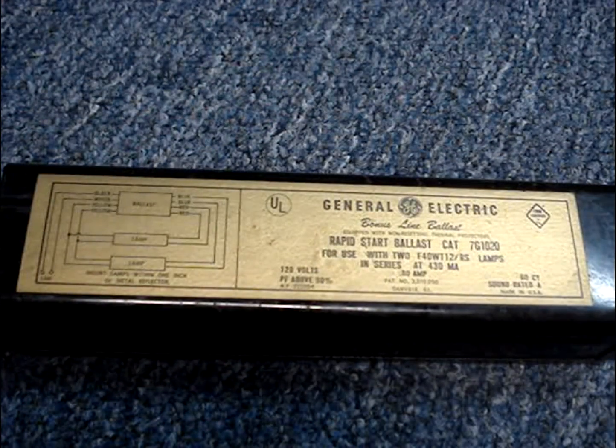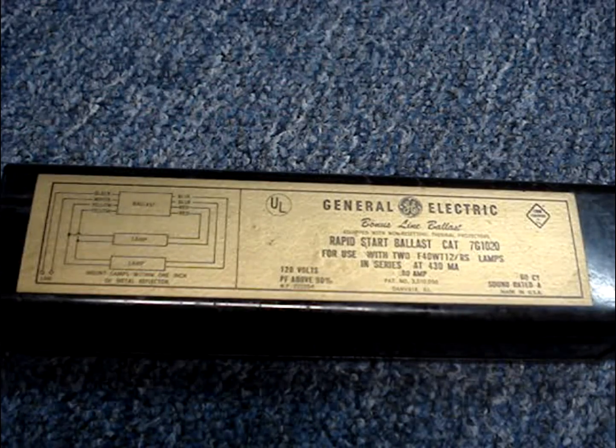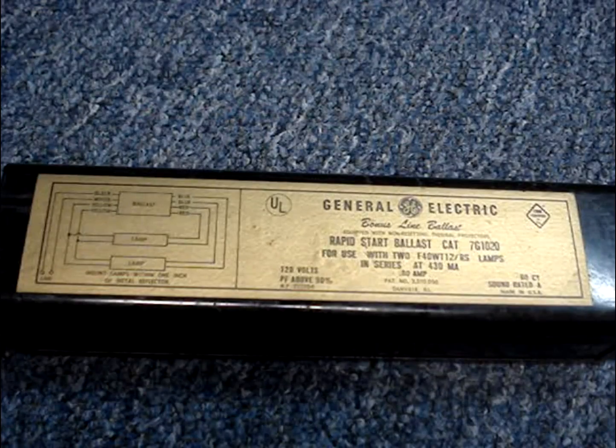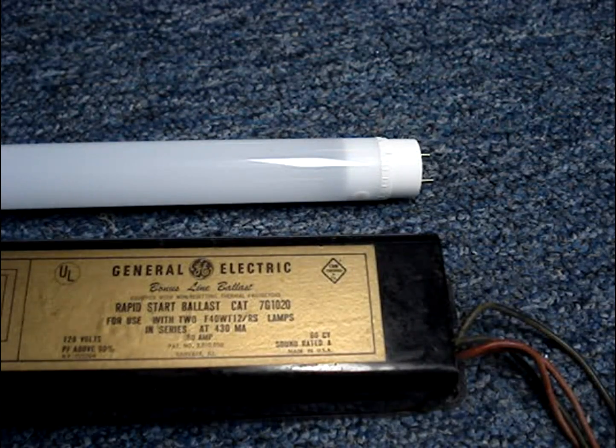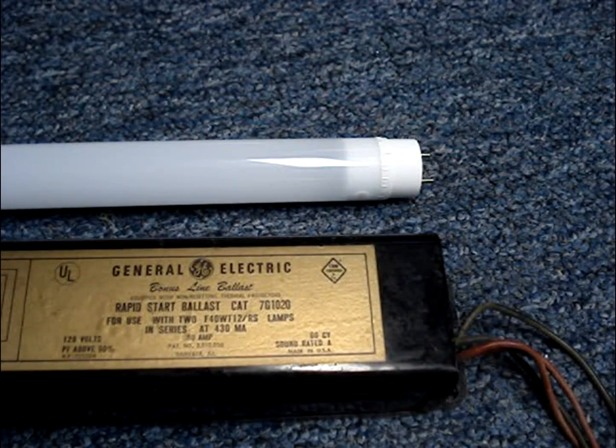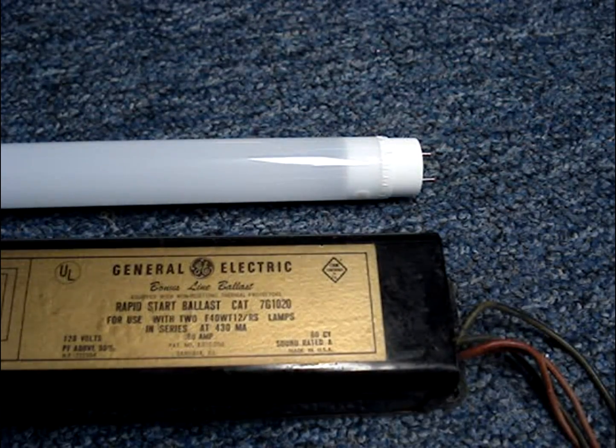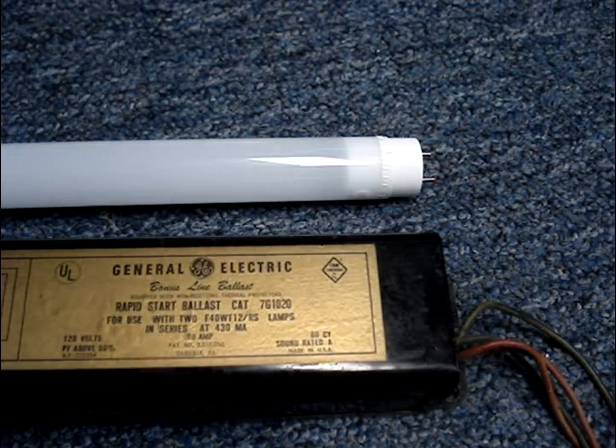The downsides are that if the ballast fails, you'll have to replace it. The tubes may not work with your ballasts and you may not get the energy savings claimed by the manufacturer. I tested a pair of plug-and-play tubes with my ballasts and I saved only 14 watts per two tube fixture. I have a video of my test. I'll put a link to that test in the box below this video.